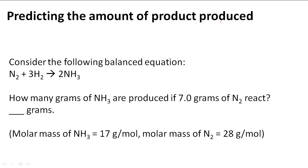Predicting the amount of product produced. In the problem it says consider the following balanced equation: N2 plus 3H2 yields 2NH3. How many grams of NH3 are produced if 7.0 grams of N2 react? So we want to know that in grams and they've given us some molar masses to help us along the way.